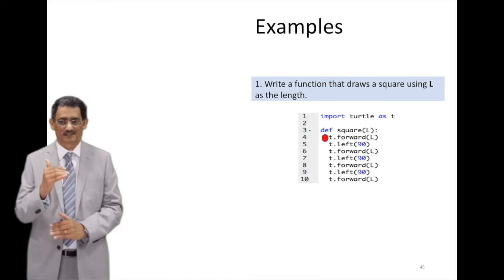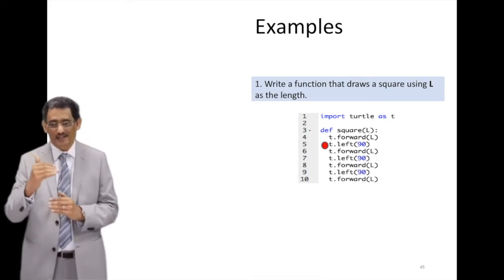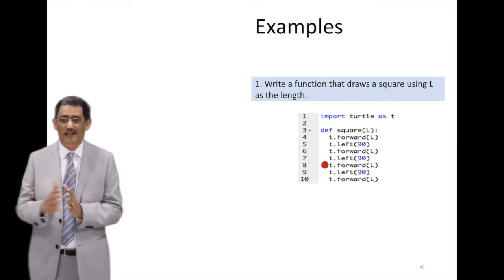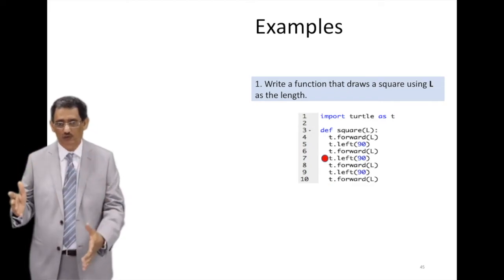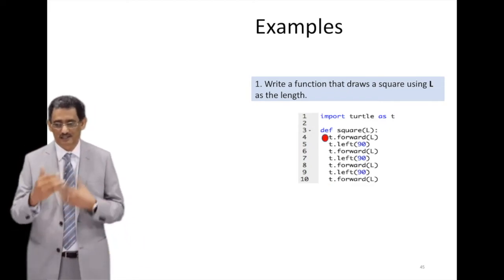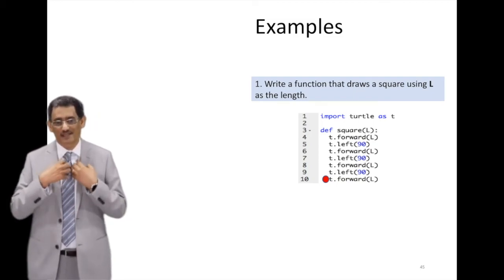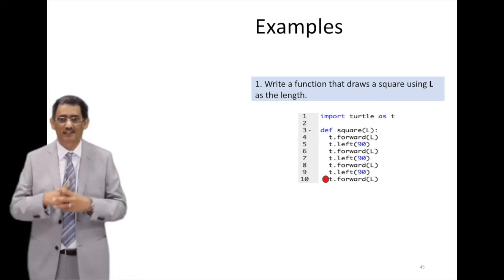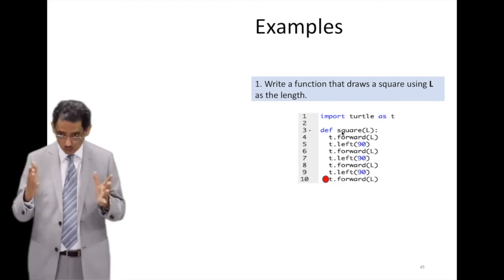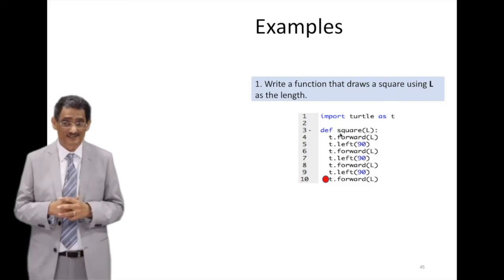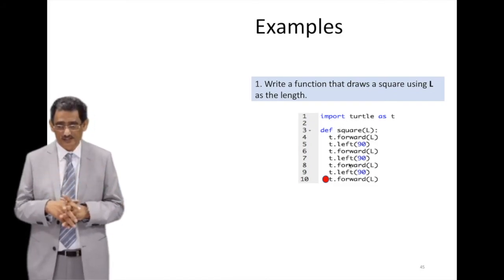So the function name is square. It's receiving a parameter called L or variable called L, and we have the colon at the end of that line. So that's the function definition. Where is the body of the function? The components of the function? It's the lines after that. So the lines after that moved to the right a little bit and started doing the normal thing we have done before, like moving forward, changing by 90 degrees and continue. So this is a function called square we created. We could have given it any name.